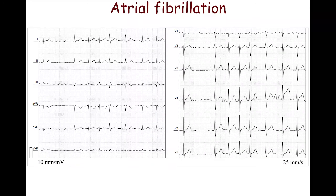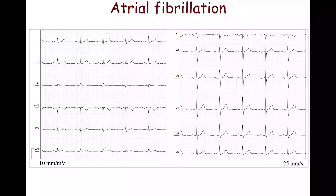There is atrial fibrillation on this ECG. This ECG is recorded in the same patient as the previous one. There are signs of left atrial dilation, such as a P wave width of 130 milliseconds and a prominent negative portion of the P wave in lead V1.